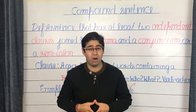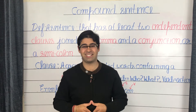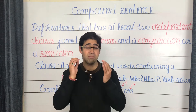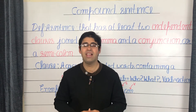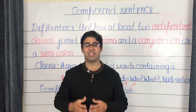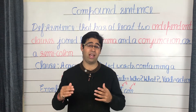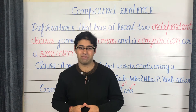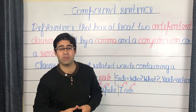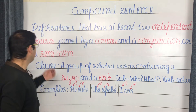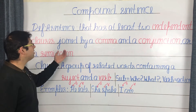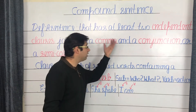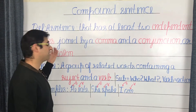Before getting into what a compound sentence is, let's quickly discuss its purpose. The use of a compound sentence is to join any two complete sentences that are in some way related to each other. This relation could either be a contrast or quite simply adding further information. Now let's get to the grammatical definition of a compound sentence: a compound sentence is a sentence that has at least two independent clauses joined by a comma and a conjunction, or a semicolon.